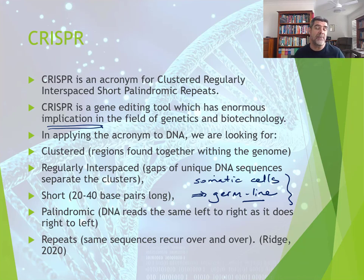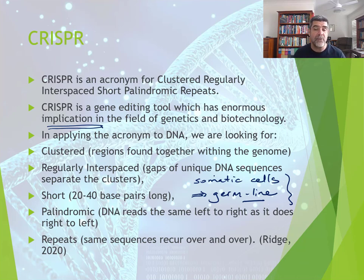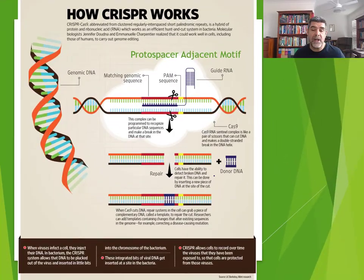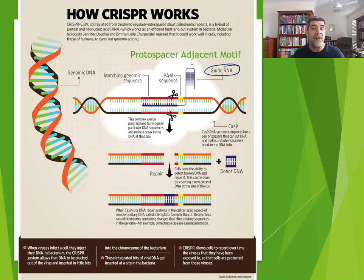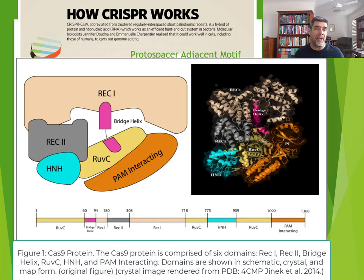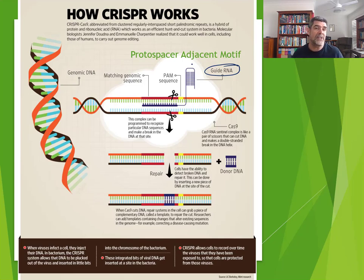When we apply CRISPR to DNA, we're looking for regions within the genome that are regularly spaced, about 20 to 40 base pairs long, that are palindromic — meaning they read the same left to right as right to left — and they occur over and over again. These are the keys to identifying the CRISPR regions within the DNA. Looking at this graphic, it's important to identify some key components: the guide RNA is really important to make sure you're finding exactly the right piece, and the Cas9 itself has a number of domains — different regions with specific functions within the Cas9 complex.